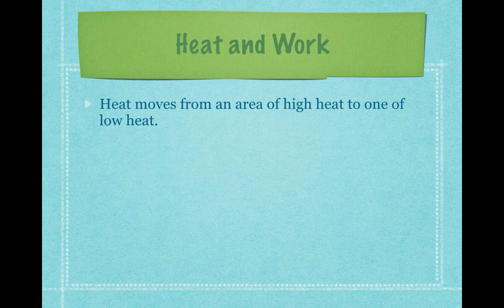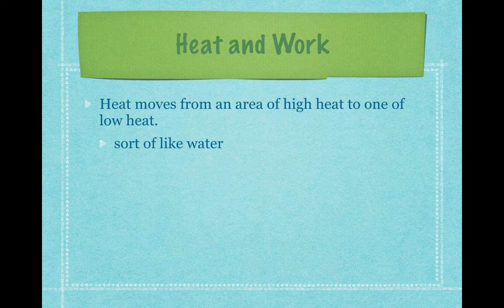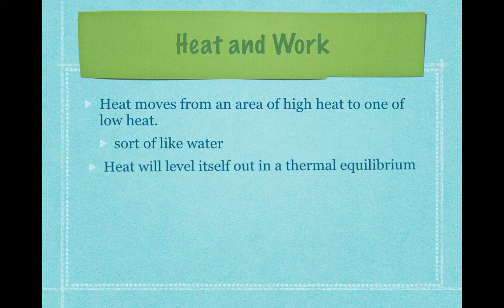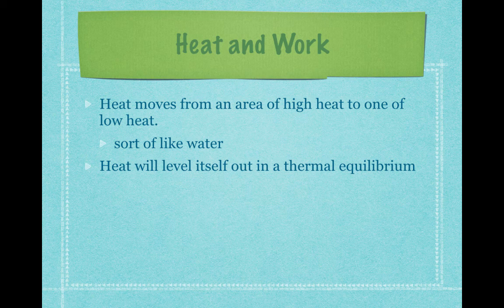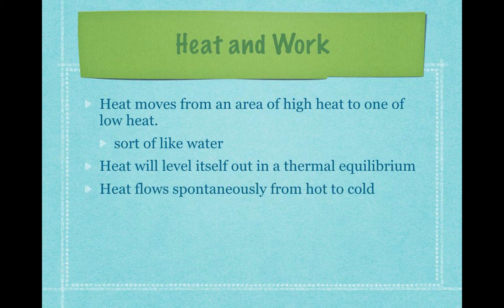Heat moves from an area of high heat to one of low heat, similar to how water flows from high to low. If you have two pieces of metal at different temperatures and put them together, heat flows from the hotter object to the cooler one until they reach the same temperature. Heat flows spontaneously — meaning without any additional energy — from hot to cold. That's its spontaneous direction of flow.